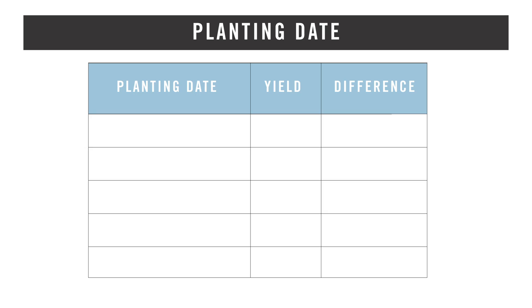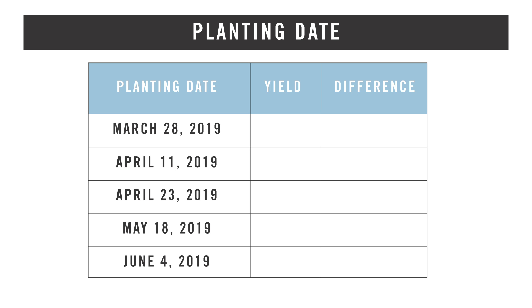Now that we've got our results back from the soybean trial at Proving Grounds, let's go over those. For plant date, we had five dates: March 28th yielded the highest at 102 bushel per acre; April 11th at 93; April 23rd at 98; May 18th at 95; and June 4th at 90. The March 28th date beat the June 4th date by 11.5 bushel per acre, beat the May date by 6.7 bushel per acre, and beat late April by 4.2 bushel per acre. Even though those early beans were under a lot of stress, being able to get them out early and trick those beans into flowering before the longest day of summer resulted in a huge yield advantage compared to planting later in the season after our corn.